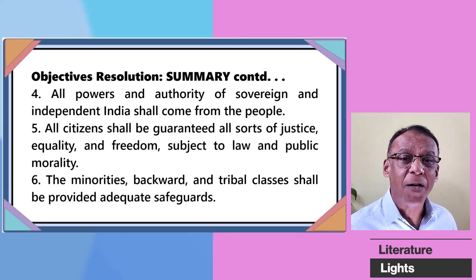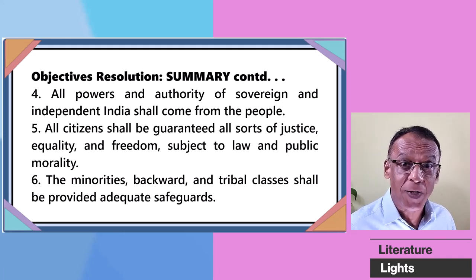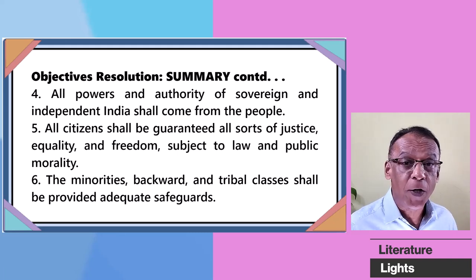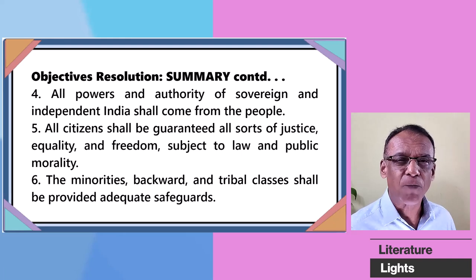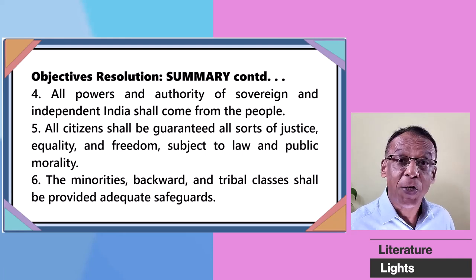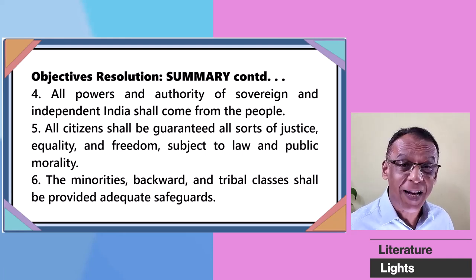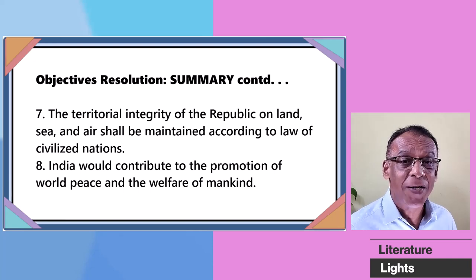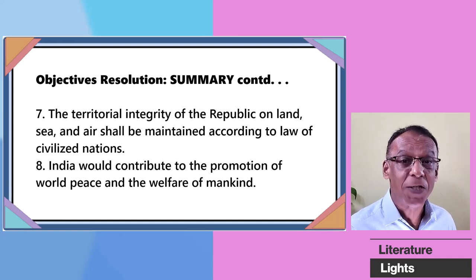Point four: All powers and authority of independent sovereign India shall come from the people, because it is going to be a democratic country — a democracy, a government of the people, by the people, and for the people. Point five: All citizens shall be guaranteed all sorts of justice, equality, and freedom subject to law and public morality. Point six: The minorities, backward, and tribal classes shall be provided adequate safeguards and will be well protected. Point seven: The territorial integrity of the republic on land, sea, and air shall be maintained according to the law of civilized nations.